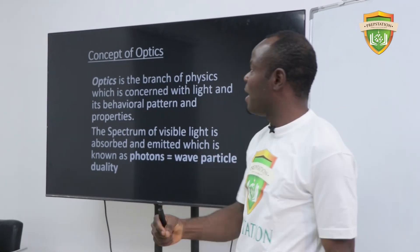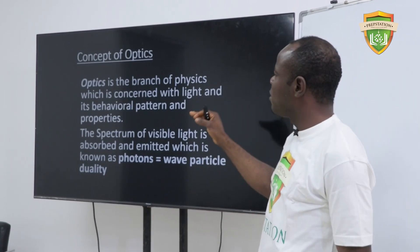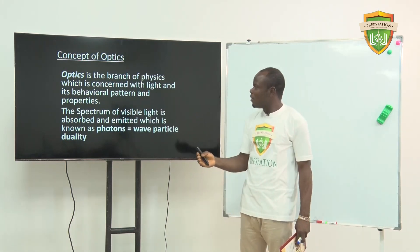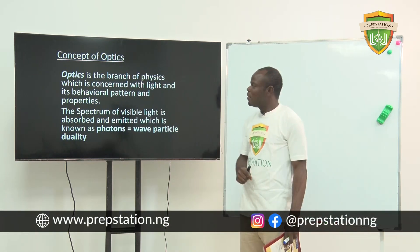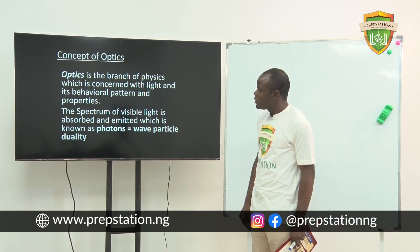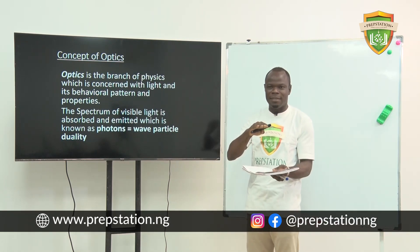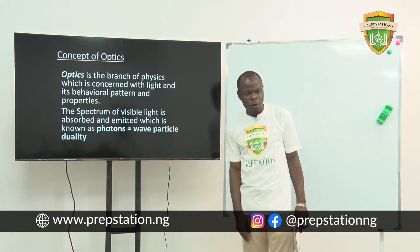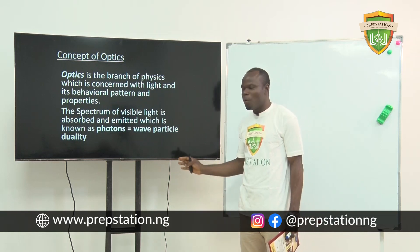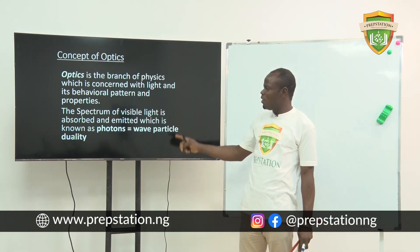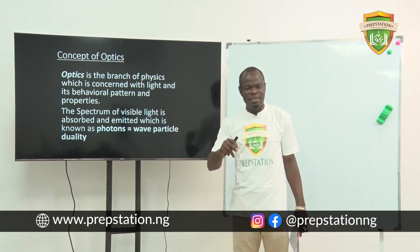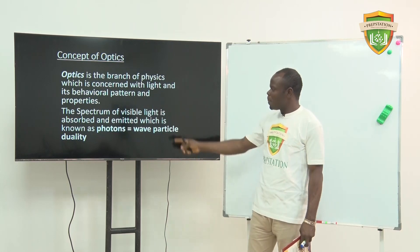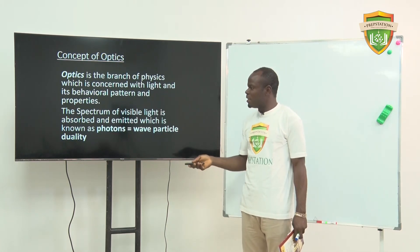Optics involves light. It is the branch of physics which concerns light and its behavioral pattern — that is, how it behaves. Looking at the properties, we have what is called the spectrum. When light is absorbed and emits, we refer to that emission as photons. This is generally known as wave-particle duality, because photons have two behaviors: it behaves as a wave and at the same time behaves as a particle.